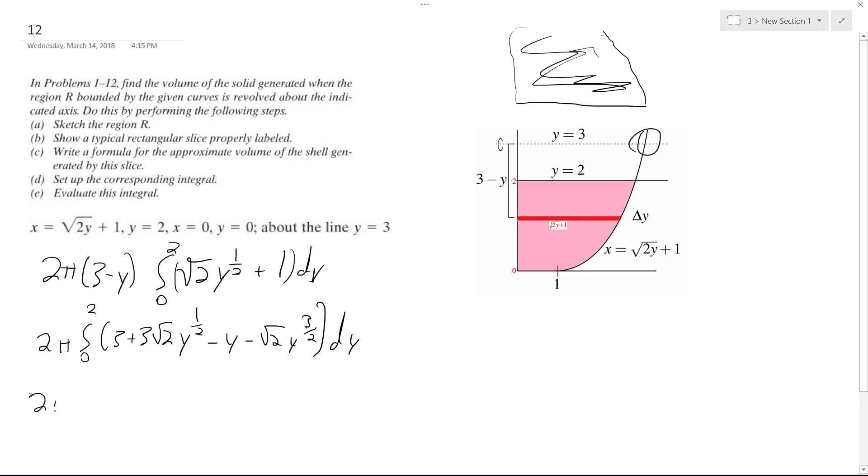We integrate this, we get 3y plus 2 root 2 times y raised to the 3 halves minus 1 half y squared minus 2 root 2 over 5 times y raised to the 5 halves from 0 to 2.